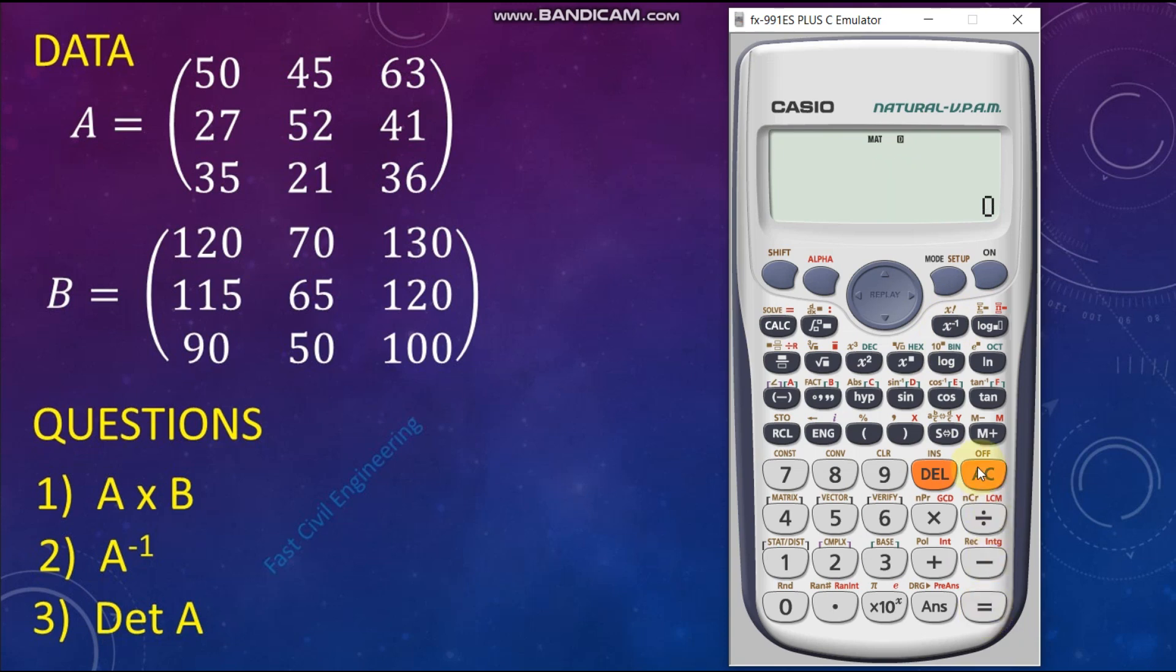Third question: Determinant of A. Again, go to Matrix Menu. Shift Number 4. Determinant number 7, click 7. Again, go to Matrix Menu. Shift Number 4. Click 3 for Matrix A. Equal. This is the third answer.